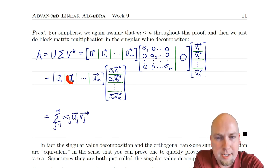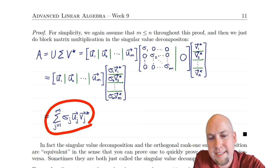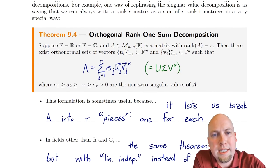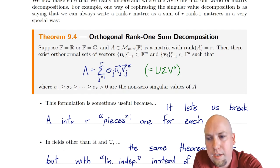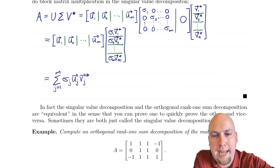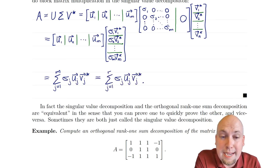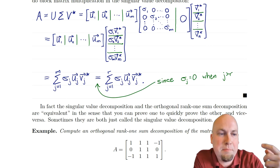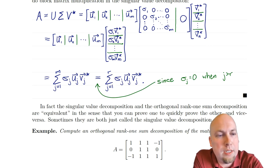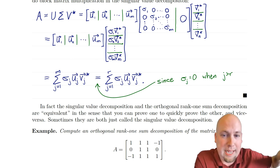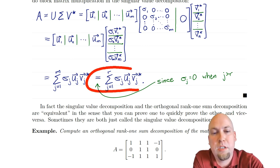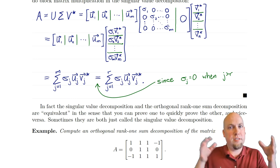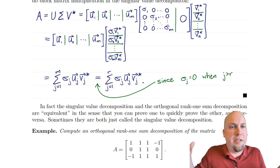We get this sum, which is almost what we wanted — except we don't want the sum to go all the way up to M, we want it to go up to R, the rank of the matrix. But these two sums are actually the same, because all of the singular values after the R-th one are equal to zero: σ_{R+1}, σ_{R+2}, all the way up to σ_M equal zero. So all terms after the R-th one don't contribute to the sum. That's the whole proof — just take the singular value decomposition and express it using columns and block matrix multiplication.